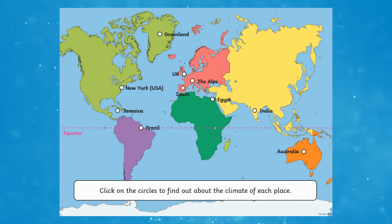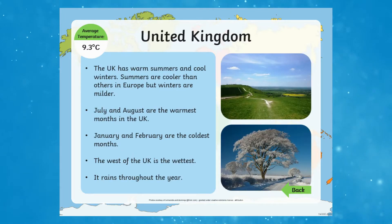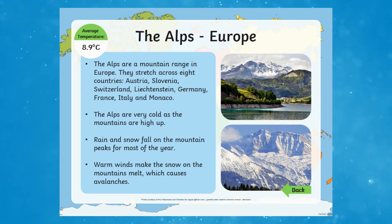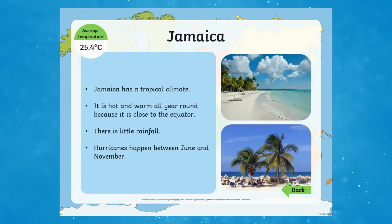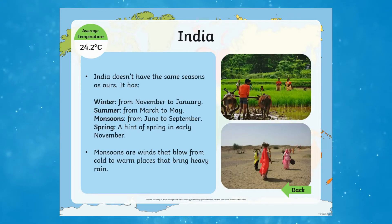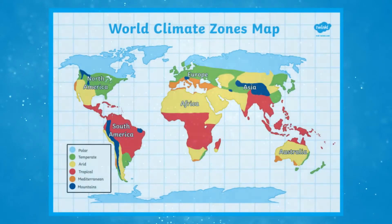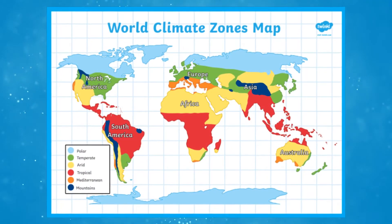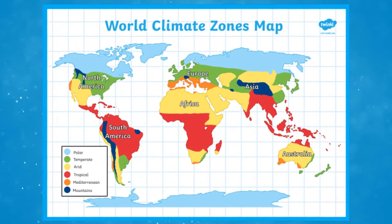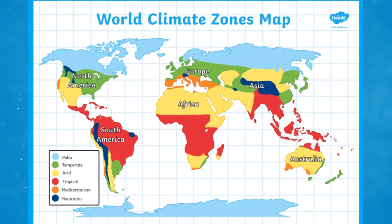If you want to go further afield with this topic, use our Climates Around the World PowerPoint. This talks learners through average temperatures and descriptions of what the climate is like in different countries. We even have a World Climate Zones poster which could be displayed in the learning area to remind learners about weather and climates around the world.